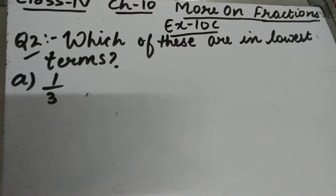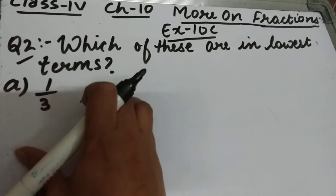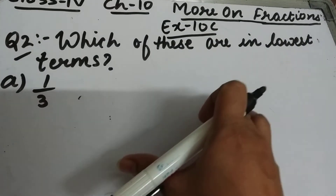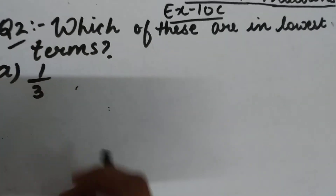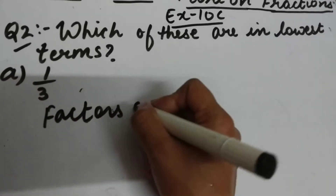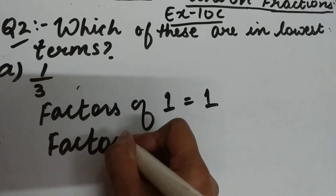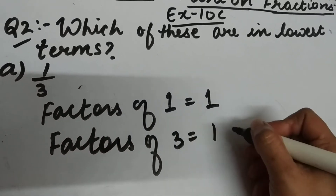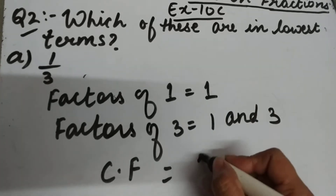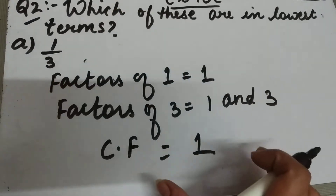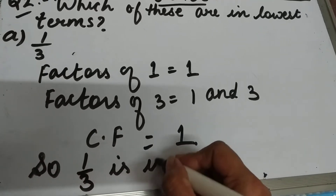Let's start question number second of exercise 10c. The question is: which of these are in lowest terms? For part a, 1 by 3 — a fraction is in its lowest terms if and only if the common factor between the numerator and denominator is 1. Factors of 1 are only 1, and factors of 3 are 1 and 3. The common factor between 1 and 3 is only 1, so 1 by 3 is in its lowest terms.